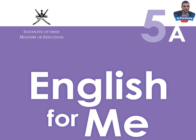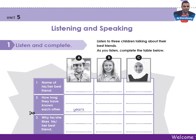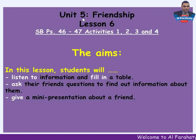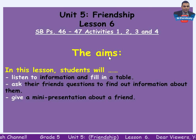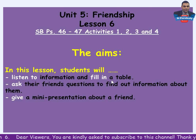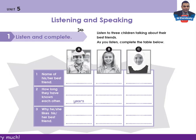Please open your skills book to page 46. What are the aims of this lesson? Unit 5 Friendship, Lesson 6, skills book pages 46 and 47, activities 1, 2, 3 and 4. In this lesson students will listen to information and fill in a table, ask their friends questions to find out information about them, and give a mini presentation about a friend — listening and speaking section.